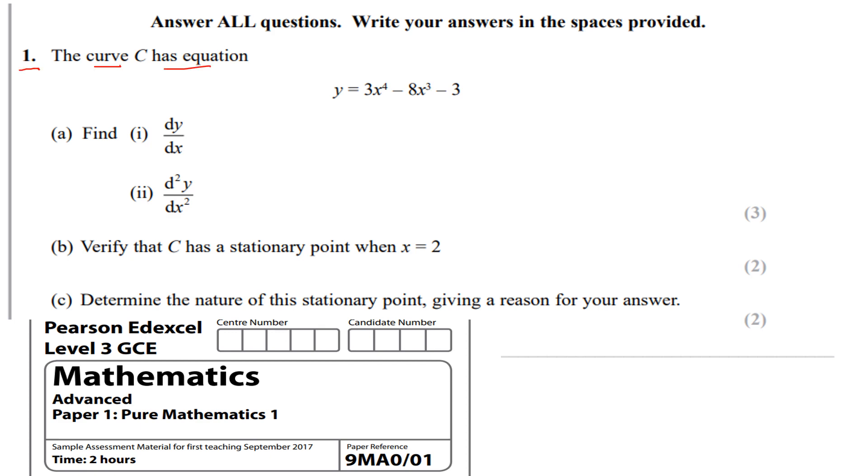The curve C has the equation y equals 3x to power 4 minus 8x cubed minus 3. Part A(i) find dy/dx, so differentiate, find the rate of change. The power comes down as a multiplier and the power reduces by 1. So 3 times 4 is going to be 12, and then the power reduces by 1, so we're going to have 12x cubed, minus 24x squared, because 8 times 3 is going to be 24, and then the power comes down by 1. Then differentiate minus 3 goes to 0, because a constant differentiates to 0.